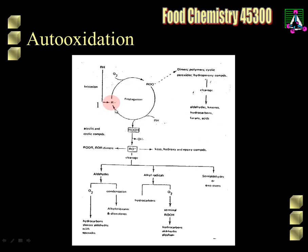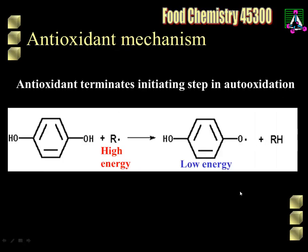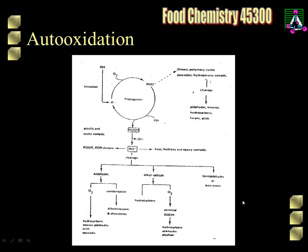This R dot can react with a phenolic antioxidant. If we put a tertiary butyl group on here, this would be tertiary butyl hydroquinone (TBHQ). The R dot reacts with this, and this high energy radical produces a low energy radical plus something that has no radical nature at all. This low energy radical won't carry on the reaction — it won't go back through the initiation and propagation steps. Antioxidants induce early termination: we've gone from a high energy, very reactive radical to a low energy one that's not going to make more radicals.